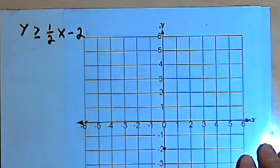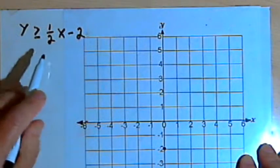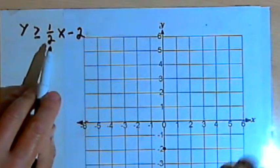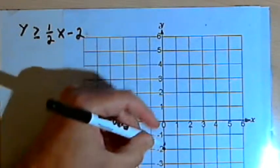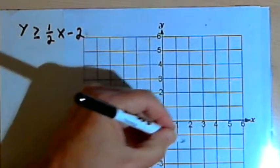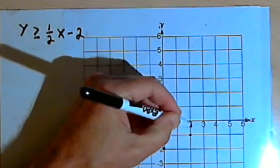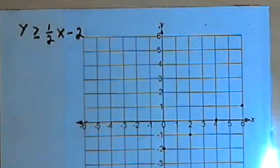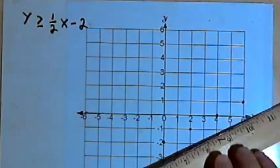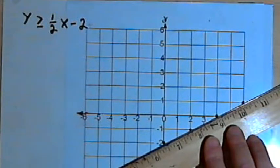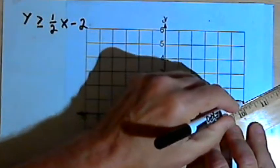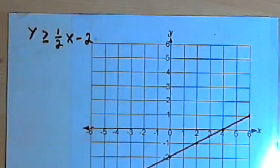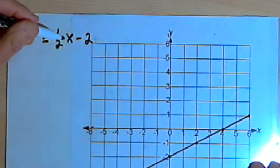So I'm going to put a point at y equals negative 2. And I know the slope, that's the coefficient of the x, or one-half. So from that point at y equals negative 2, I can go up 1 and over 2. I can go up 1 again and over 2. I'll put dots in each time I do that, and then I'll just connect those dots.